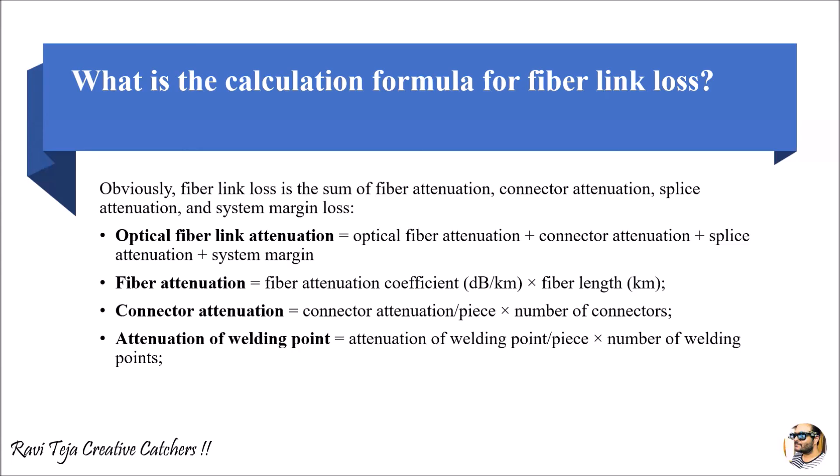The attenuation at welding points refers to fusion splicing, where optical fiber cables have several joints made using an external welding process. This attenuation is calculated as the number of welding points multiplied by the loss at each welding point — similar to connector attenuation. Considering how many welding points exist throughout the optical fiber cable and how much loss occurs at each point, all these factors are combined to calculate the final fiber link loss budget.